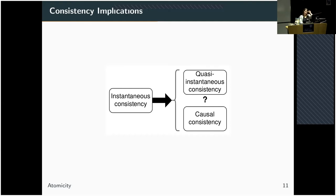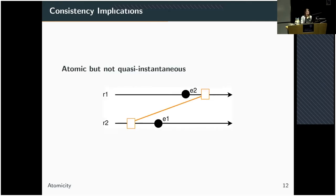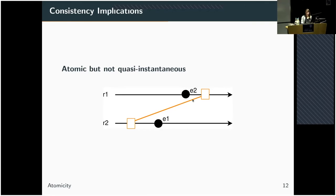What is more interesting is the relationship between quasi-instantaneous consistency and causal consistency. Here we see an example of a snapshot that is atomic but not quasi-instantaneous. It's a simple example because it needs to be atomic — there are no causal relationships between E1 and E2, since both processes are concurrent to each other. But it's the same example we saw earlier for a not quasi-instantaneously consistent snapshot: we cannot find a hypothetical instantaneous snapshot that would have produced the same result.